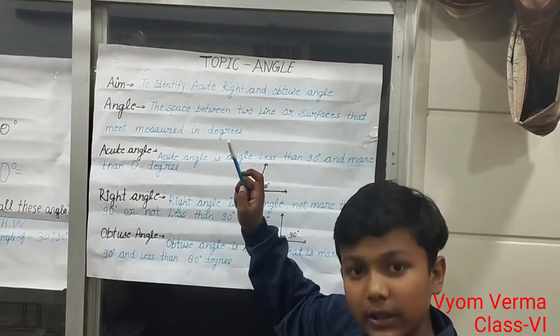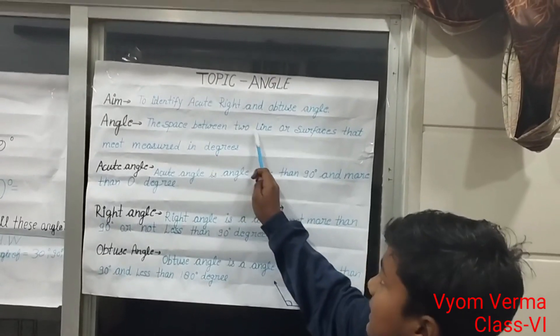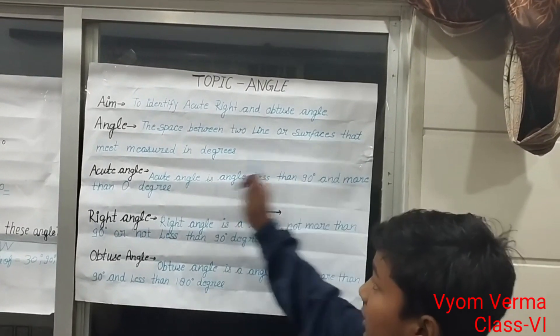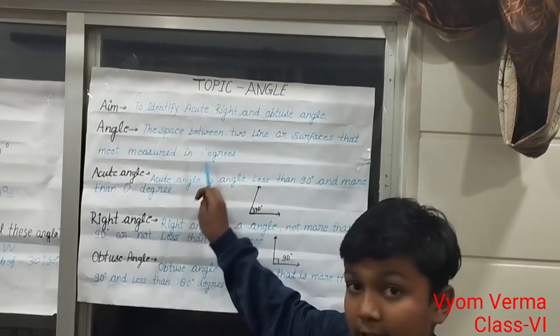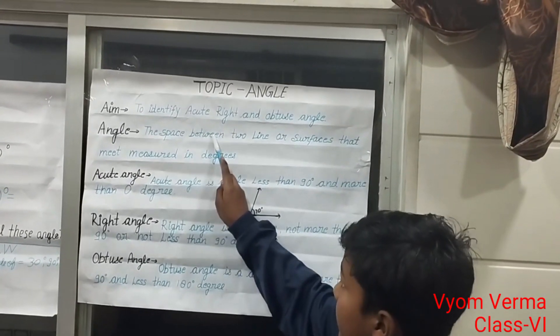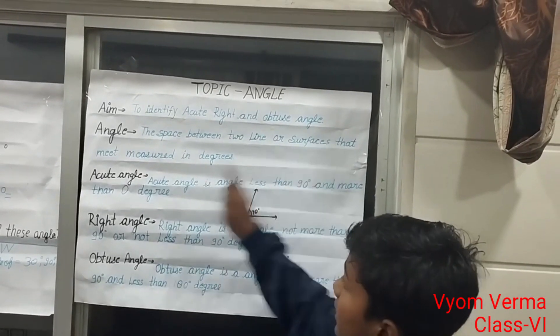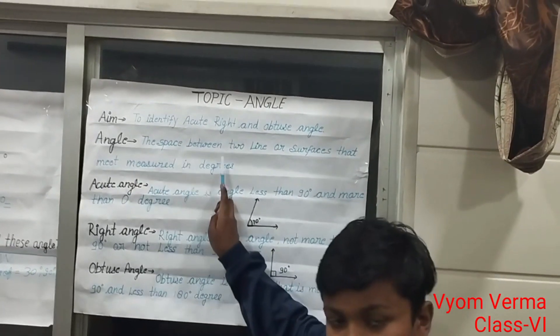First of all, we shall know what is an angle. An angle is the space between two lines or surfaces that meet, measured in degrees. I am repeating again: the space between two lines or surfaces that meet, measured in degrees.